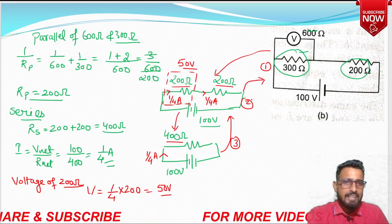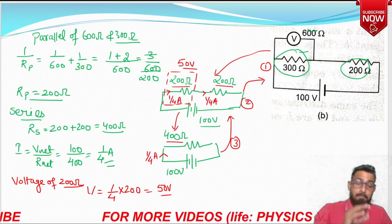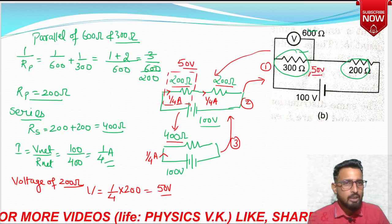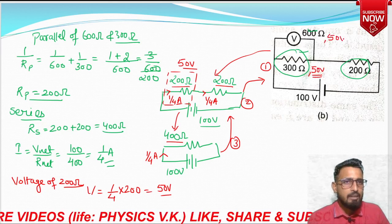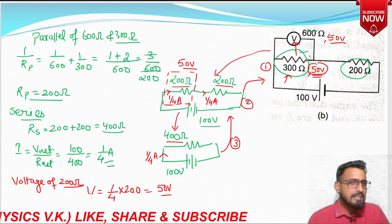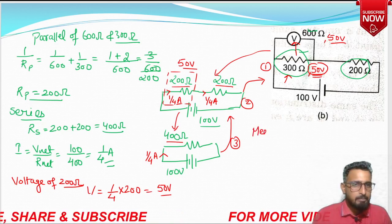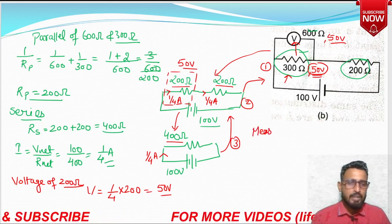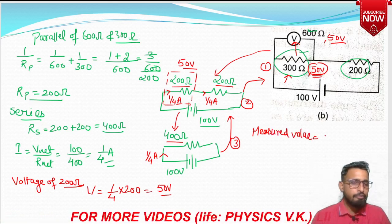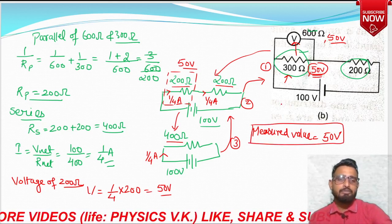Now going back from circuit 2 to circuit 1: this 200 ohm was the parallel combination of 300 and 600. In parallel, voltage is the same. So the voltage across 300 ohm is 50 volt, and across 600 ohm is also 50 volt. The measured value of potential difference shown by the voltmeter is 50 volt. So this time, 300 ohm has 50 volt.